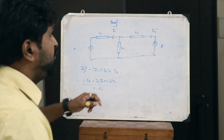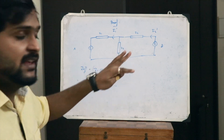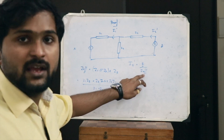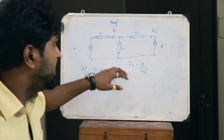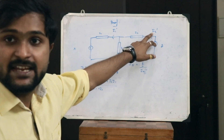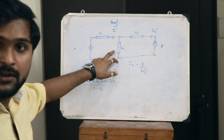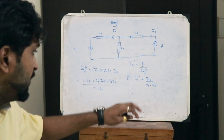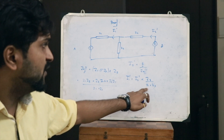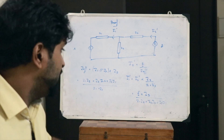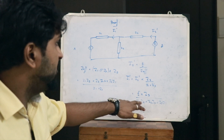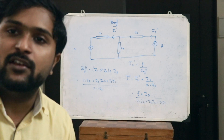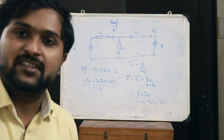So I2 dash equals E divided by Z_eff. Then I1 dash is given by the current divider as I2 dash · Z3 / (Z1 + Z3), which equates to E · Z3 / (Z1·Z2 + Z2·Z3 + Z3·Z1). This is the same value of current that we obtained in the previous case.